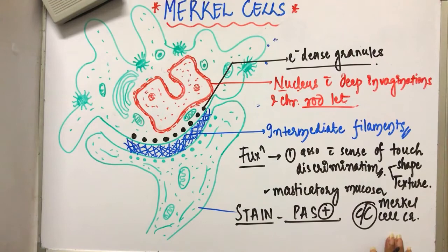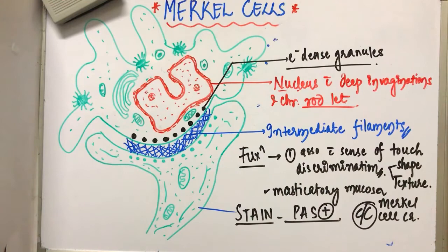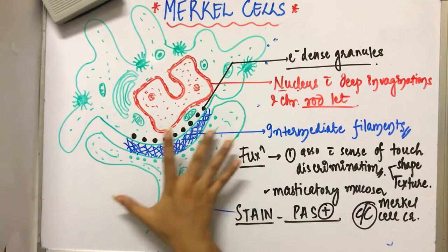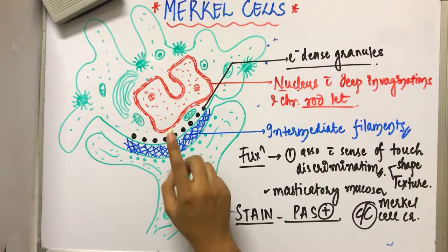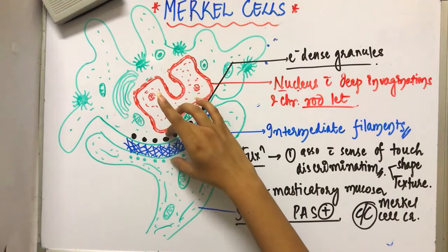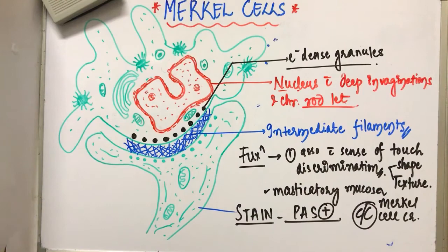So this is it about the Merkle cells. These are of neural crest origin. They are associated with touch discrimination and are found in the stratum basal. These are oval receptor cells with synaptic contact with the somatosensory afferents or axon terminals. They have a characteristic nucleus with deep invaginations and rodlets, intermediate filaments at the synaptic junction, and are PAS positive. They can turn malignant and cause Merkle cell carcinoma. I hope I have made myself clear. Thank you. Keep visiting.